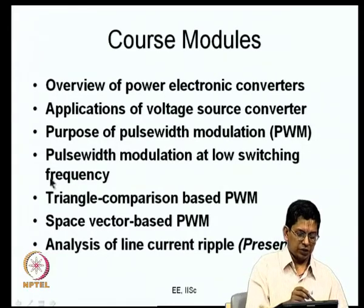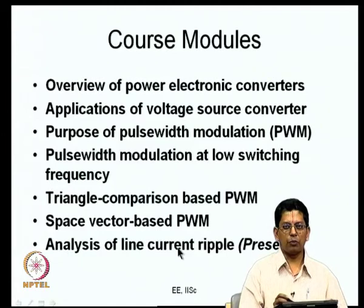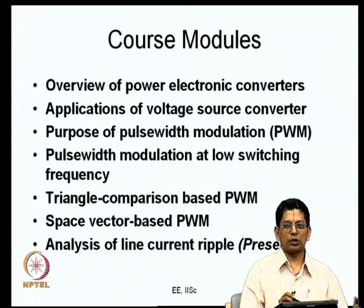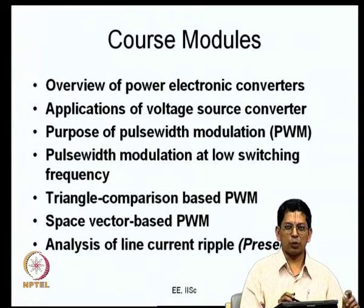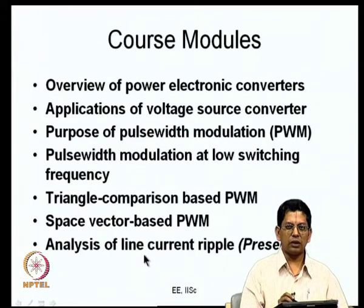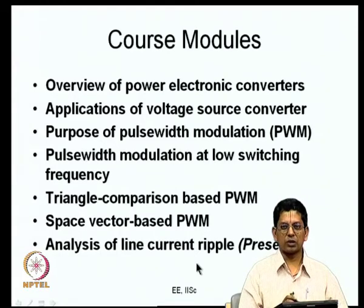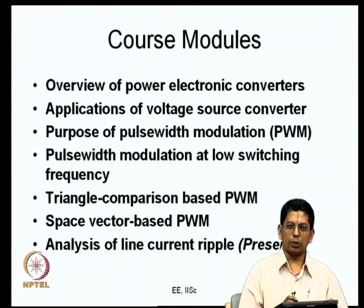Now in this 7th module we have been looking at the line current ripple. The earlier modules focused on how to generate PWM. When you generate PWM you are controlling the fundamental voltage, but it is not just fundamental — there are also harmonic components that produce harmonic currents. All these harmonic currents produce what is called a ripple current. We are trying to evaluate the RMS current ripple, and that is what we have been doing in this module.